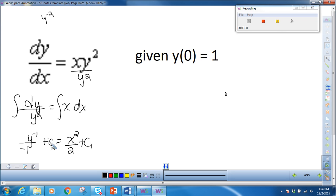So generally, I don't write the c on this side, and I just write it on this side. And this represents the constant that I got from both sides, if you will. So what I have now is negative 1 over y is equal to x squared over 2 plus c.